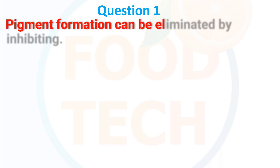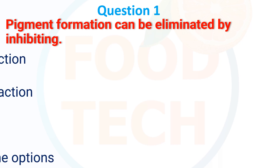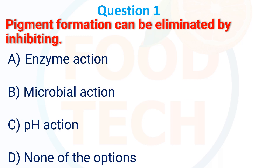Pigment formation can be eliminated by inhibiting: A. enzyme action, B. microbial action, C. pH action, D. non-adoption. The answer is A, enzyme action.